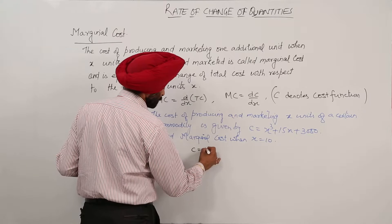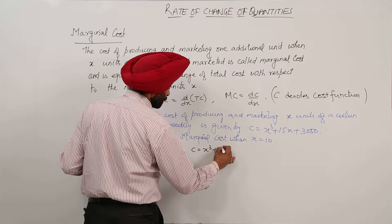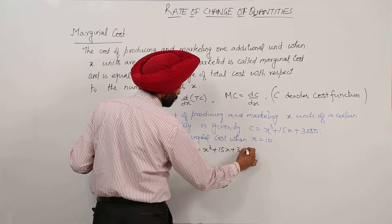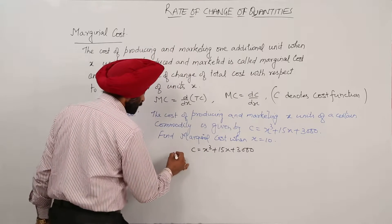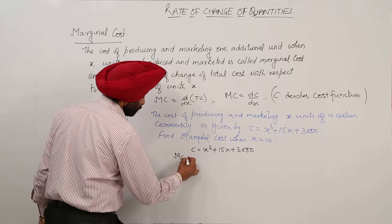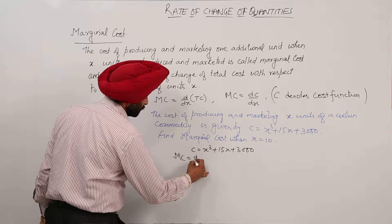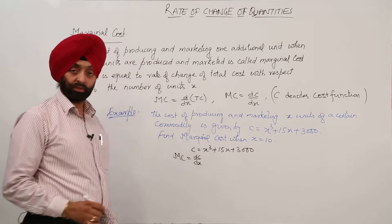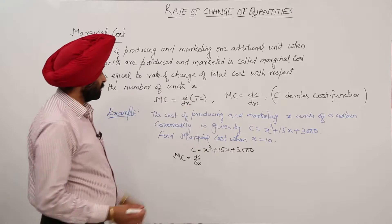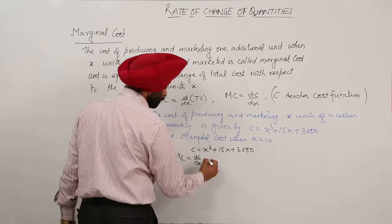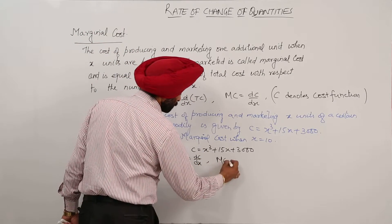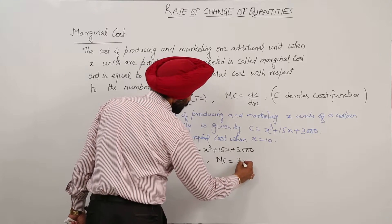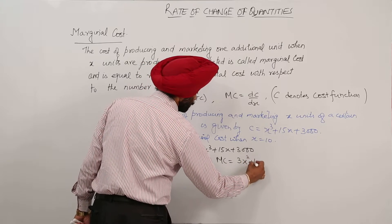C is equal to x cube plus 15x plus 3000. Marginal cost is equal to d by dx of C — that's d by dx of total cost. So marginal cost is equal to 3x squared plus 15.